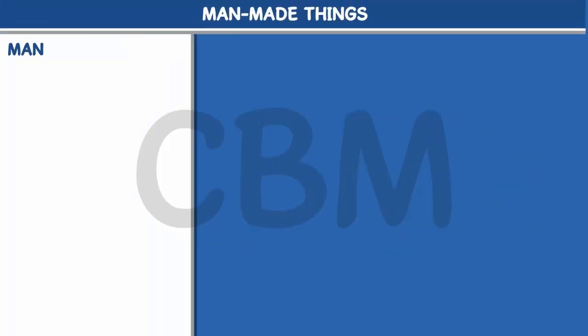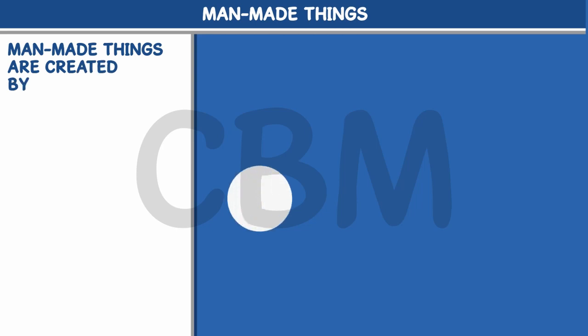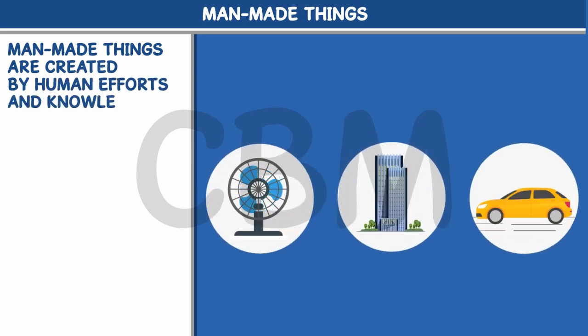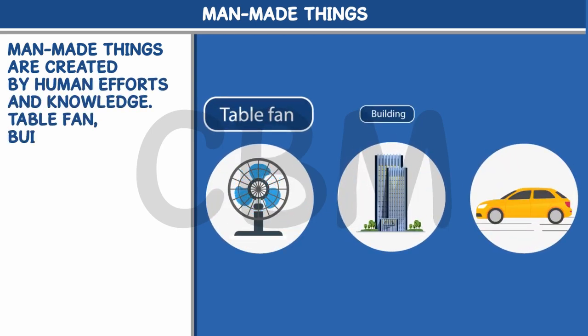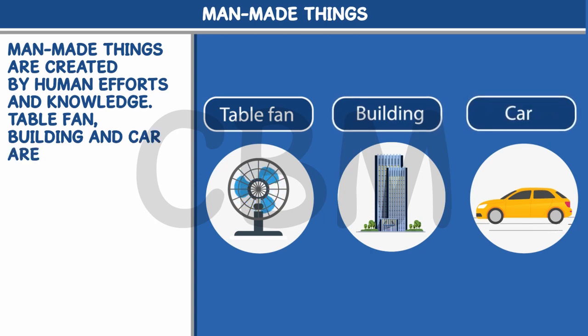Man-Made Things are created by human efforts and knowledge. Table fan, building, and car are examples of man-made things.